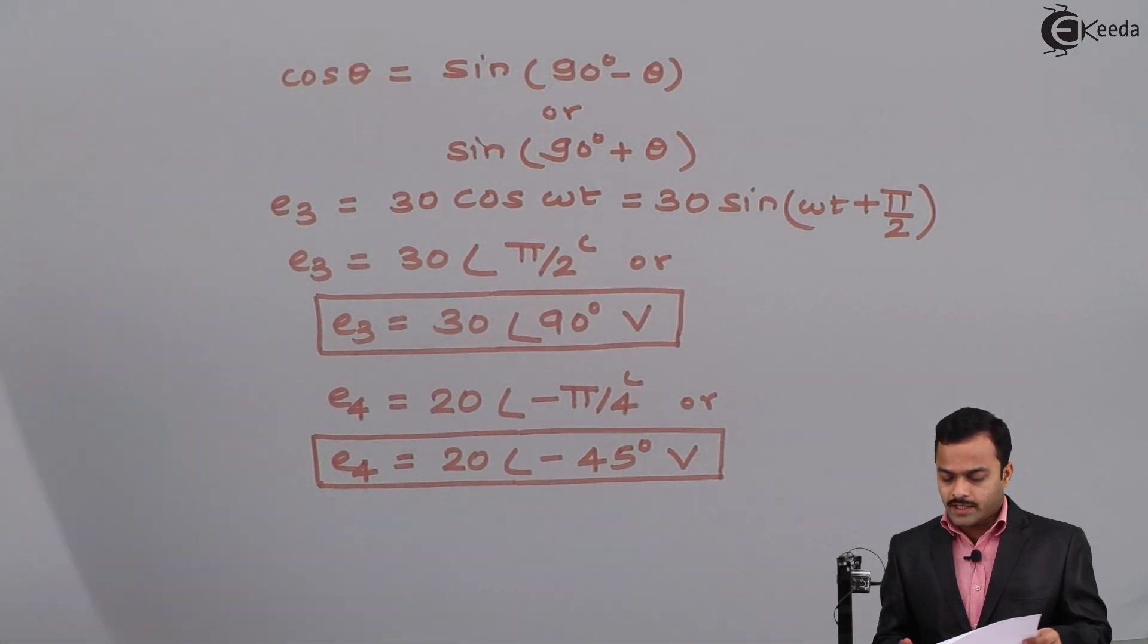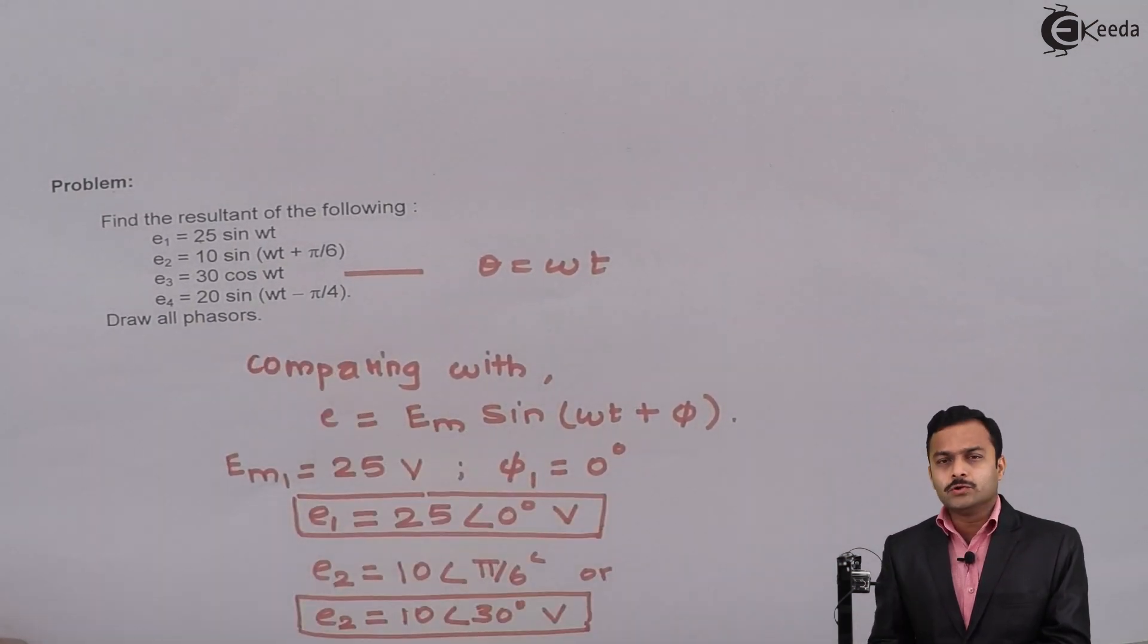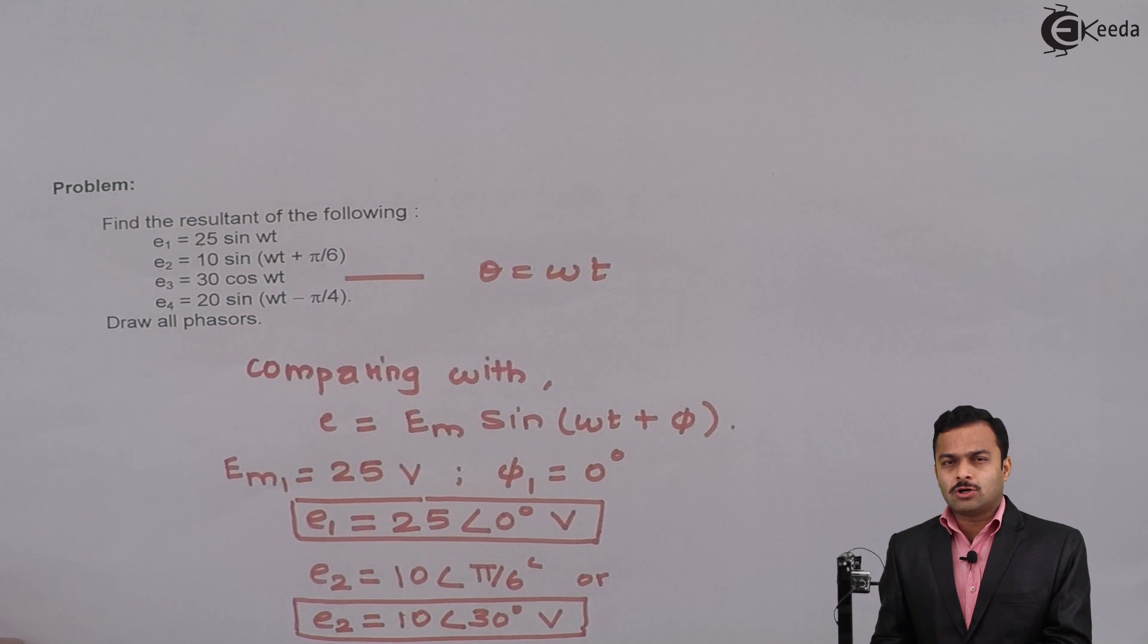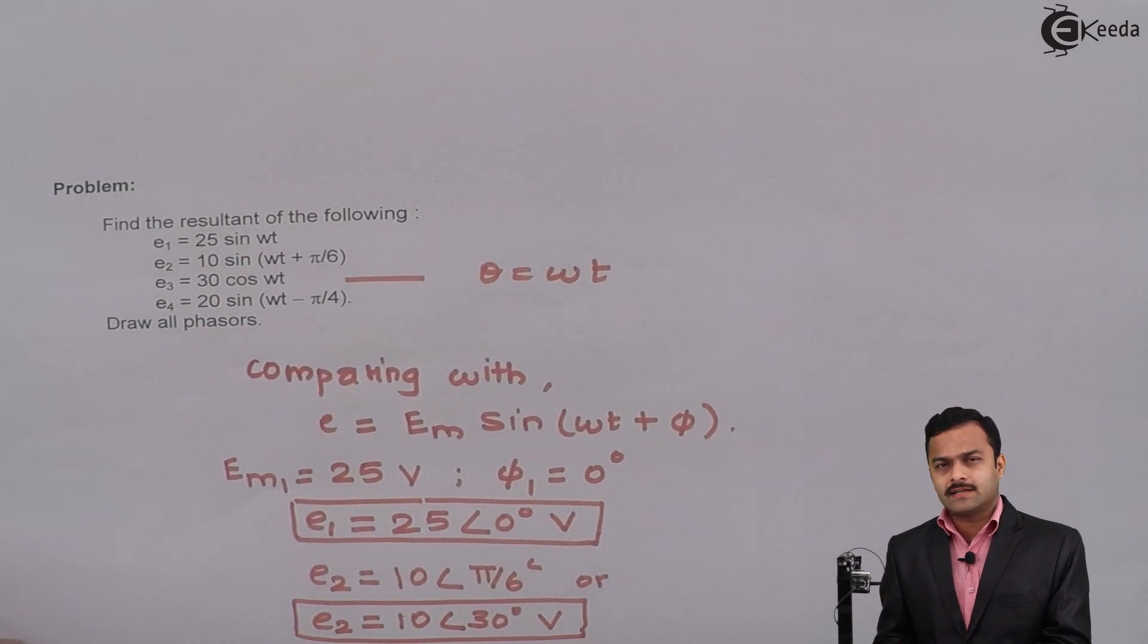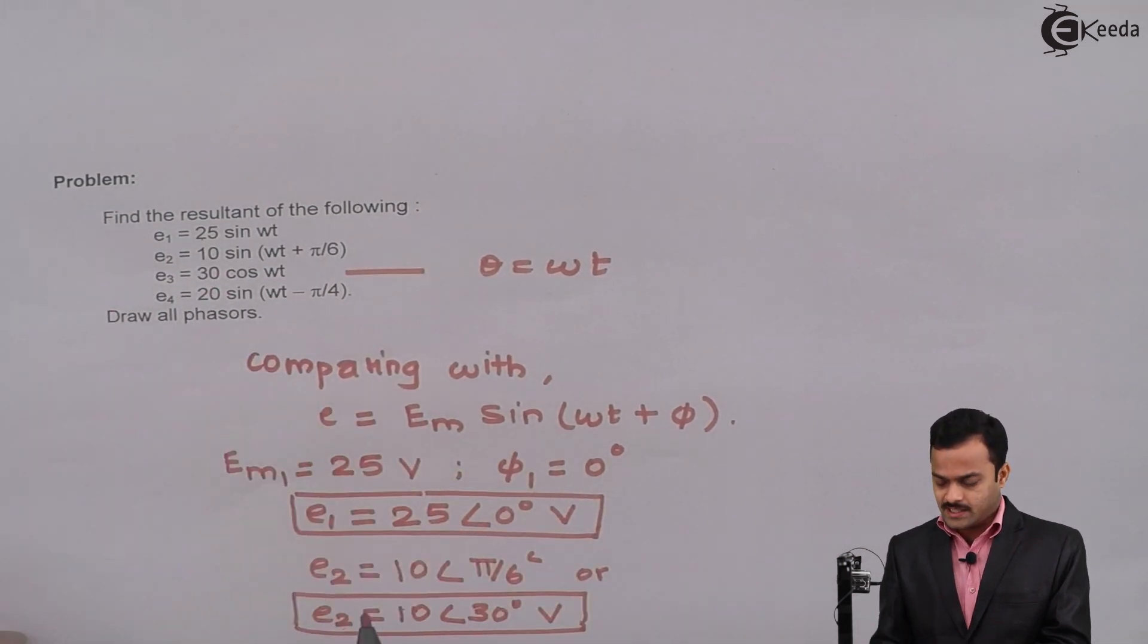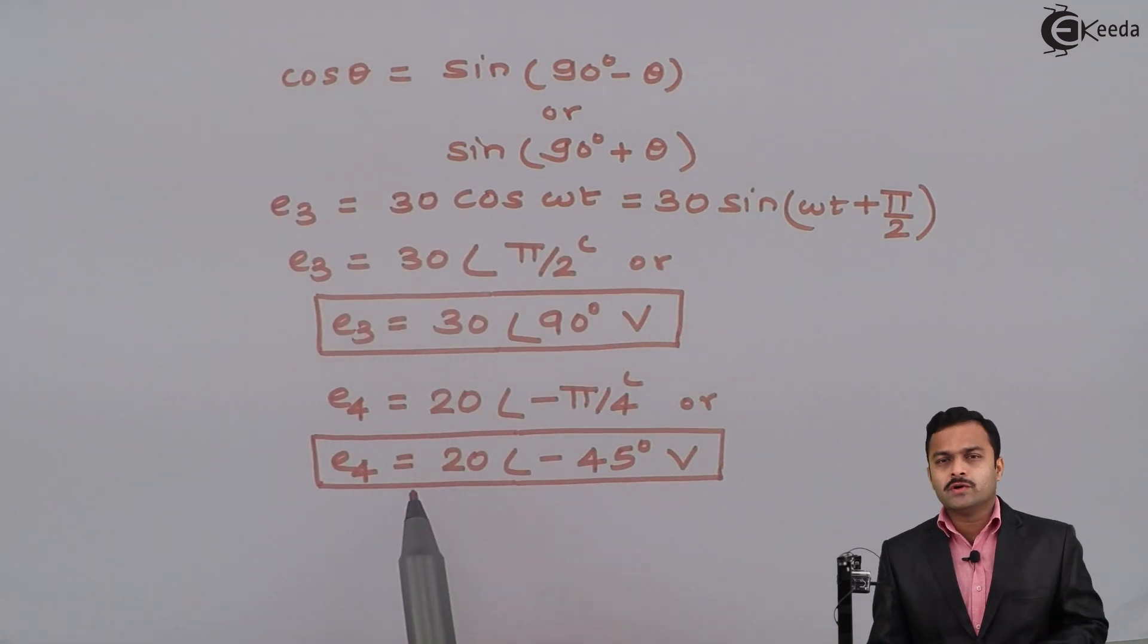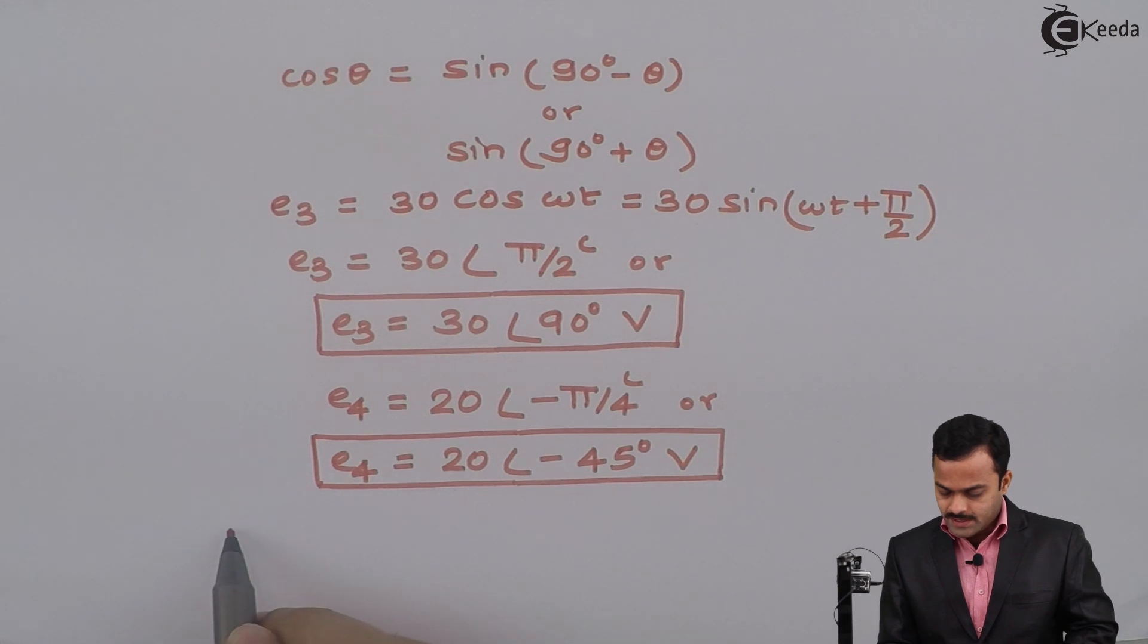Now considering all these equations, if I want to get a resultant it will be very difficult because every time I have to use sine to cosine conversion or maybe factorization/defactorization formulas. Instead, what I have done: all the waveform equations I converted into phasors, and these phasors I am going to insert in a calculator to get a resultant.